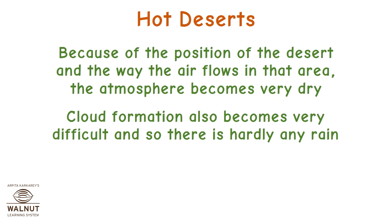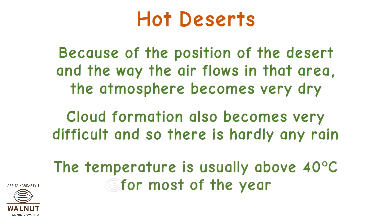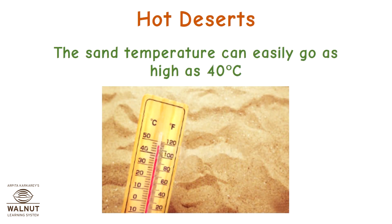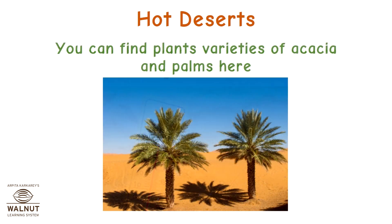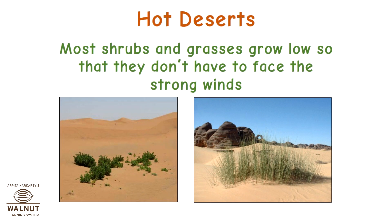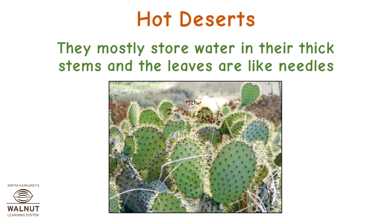Cloud formation becomes very difficult and so there is hardly any rain. The temperature is usually above 40 degrees Celsius for most of the year, and the sand temperature can easily go as high as 40 degrees Celsius. You can find plants — varieties of acacia and palms. Most shrubs and grasses grow low so they don't have to face the strong winds, and they mostly store water in their thick stems; the leaves are like needles.